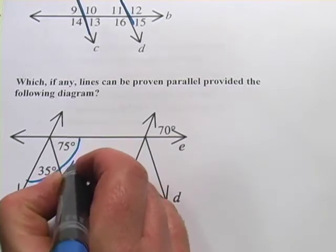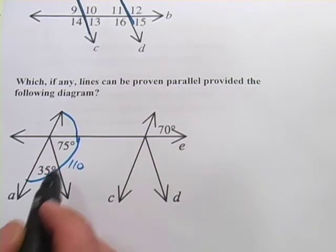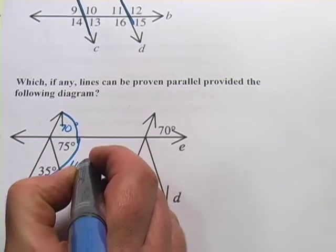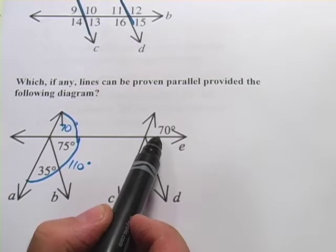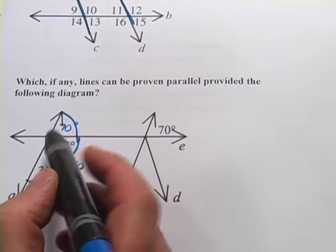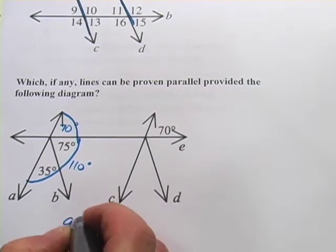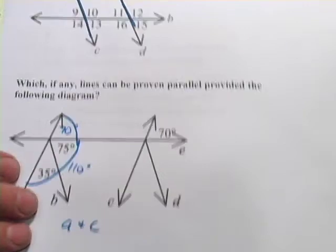And 35 and 75 is 110. I know that this will make up a linear pair, so 110 plus 70 would be that one. And aha, now what I've got is corresponding angles. So it looks like A and C are parallel. That would be the corresponding angle converse to prove that.